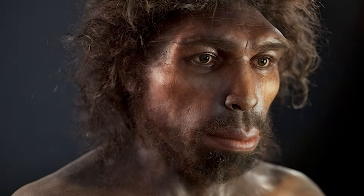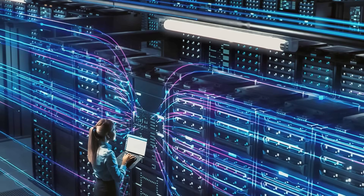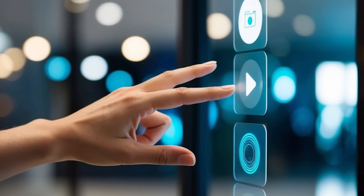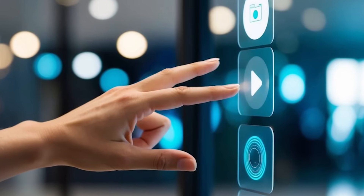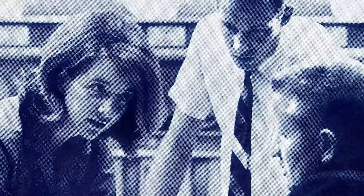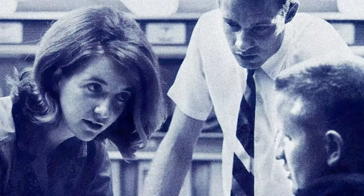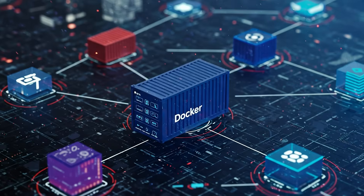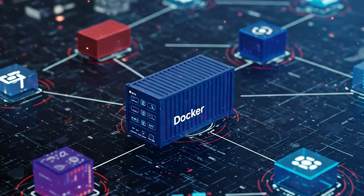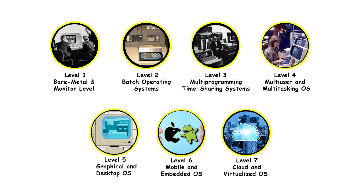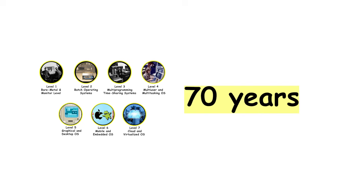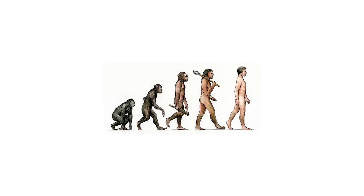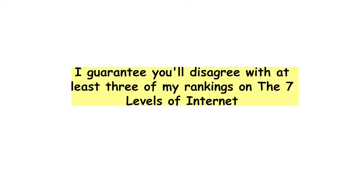If you understand all seven levels of operating system evolution — from toggle switches to distributed cloud systems — you understand one of computing's most important journeys. We went from million-dollar mainframes that required PhDs to operate, to computers in everyone's pocket, to computing infrastructure that spans the globe. That's the complete evolution of operating systems: seven levels, seven decades, infinite innovation. Now go watch the next one — I guarantee you'll disagree with at least three of my rankings on the seven levels of internet.